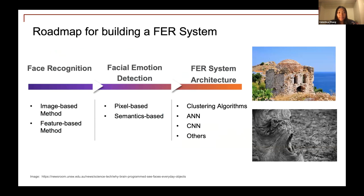Here's a roadmap for a typical FER system implementation. It starts off with facial recognition — our research uses a standard algorithm from the OpenCV library for this step. We also note the phenomenon of pareidolia, where humans see faces in everyday objects, involving a particular part of the human brain called the fusiform face area. The second step is facial emotion detection, where we make decisions on how to capture facial expressions and how to label the data. The last step is where we select the system architecture and specific AI techniques for FER.